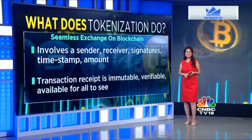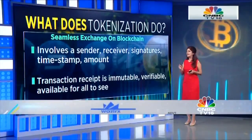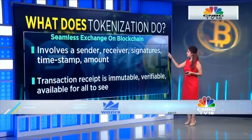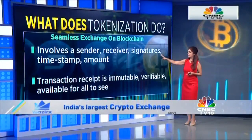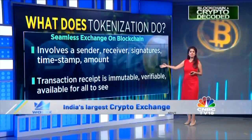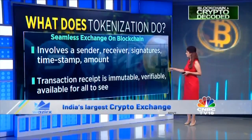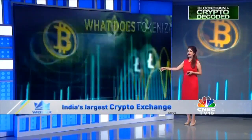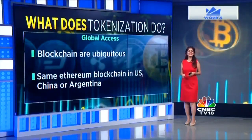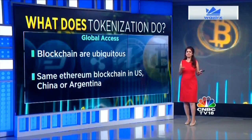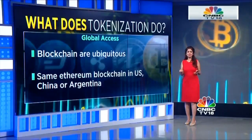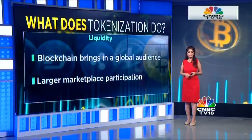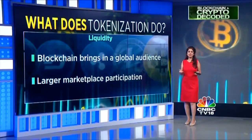Each transaction that involves a token has a sender, receiver, signatures, timestamp, and amount. The transaction receipt is immutable, verifiable, and available for all to see. It has global access, as it's the same blockchain in the U.S., Argentina, or China. It ensures liquidity by way of a global audience and large participation.